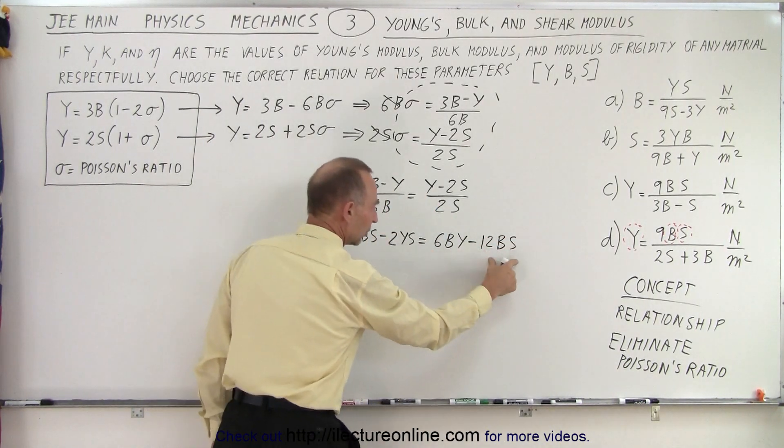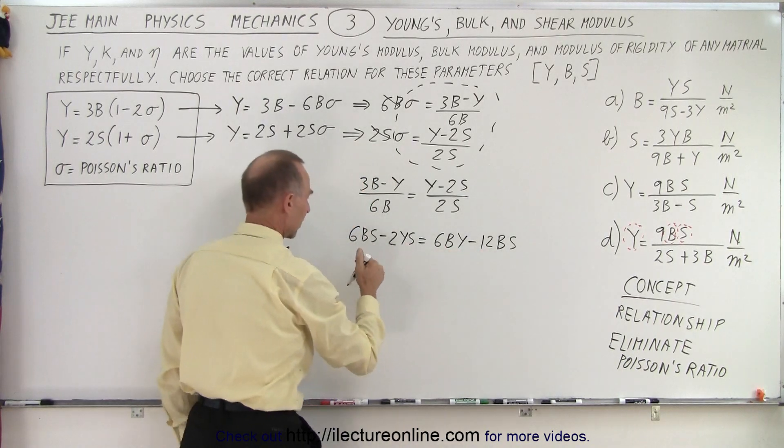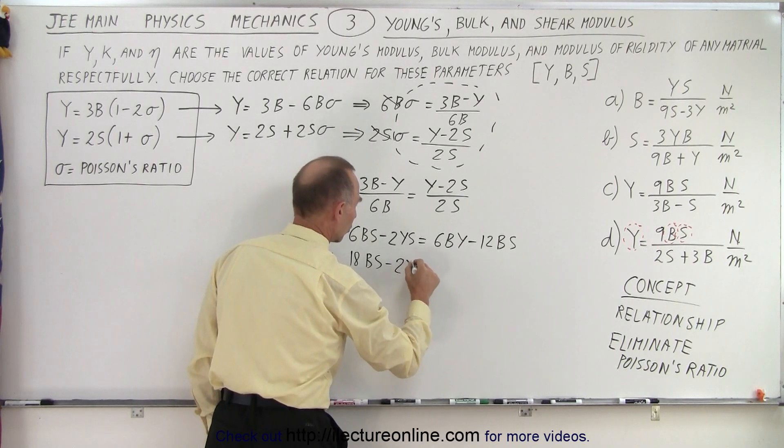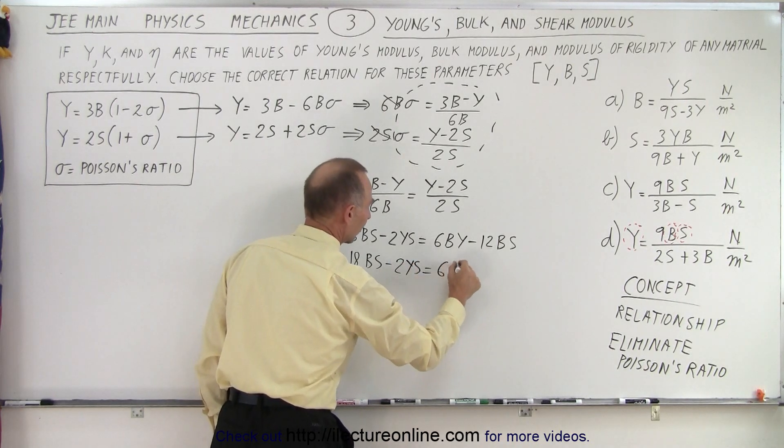Then notice we have common terms, so I can move this across and make this into 18BS minus 2YS is equal to 6BY.